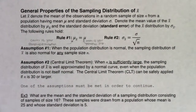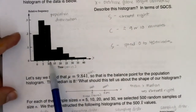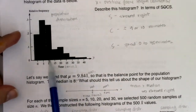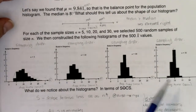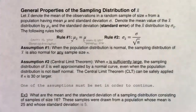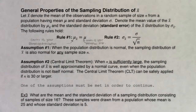We had all of those hockey games, and the population center was at about 10 minutes. The centers for all of our sampling distributions were also at about 10 minutes. So whatever the center for your population distribution, your sampling distribution is going to be at the exact same number or pretty darn close to it.